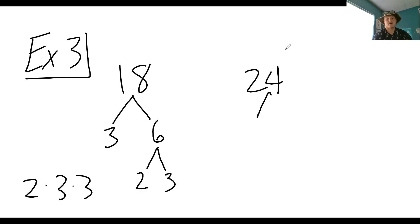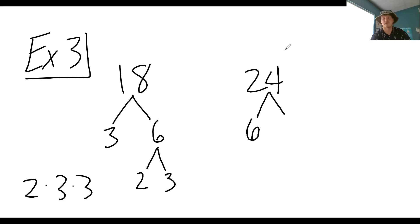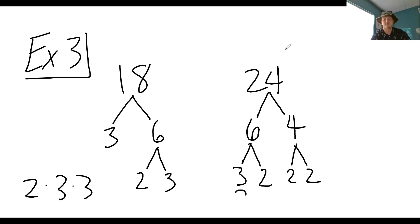For 24 — what would be the factor tree for 24? Six times four. Three times two, and then two times two. So I would list out two times two times two times three — or three times two to the third using exponents if you want.